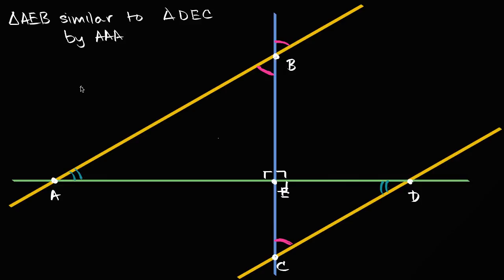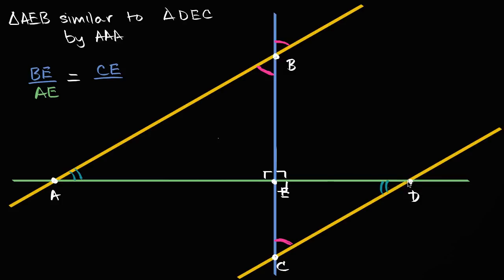With similar triangles, the ratio of corresponding sides is going to be the same. So we can say that the ratio of BE to AE is going to be equal to the ratio of CE to DE. The corresponding side to BE is side CE, and this comes directly from the similarity of the triangles — once we establish that, we can say the ratio of corresponding sides are going to be the same.